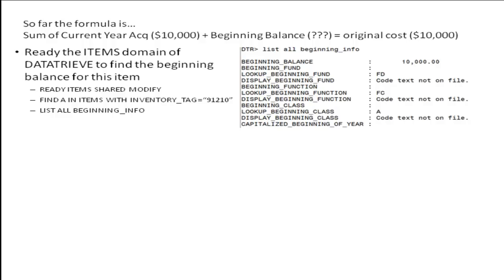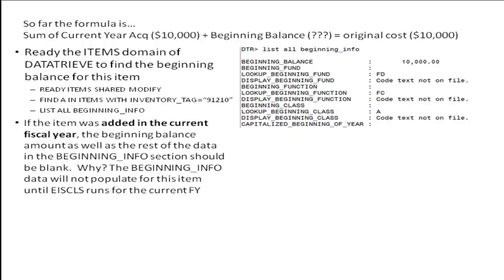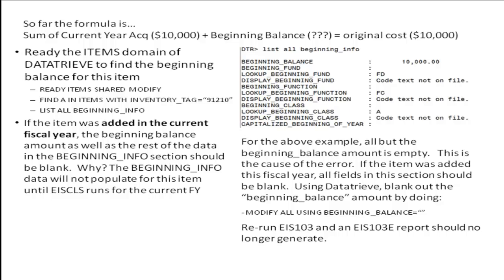If the item was added in the current fiscal year, the fields in the beginning info section should be blank. Why? Because the beginning info data for this item will not populate until EIS close runs for the current fiscal year. If you find it has already been set — in particular the beginning balance — this is the cause of the error. Using data tree, remove all the beginning info data.